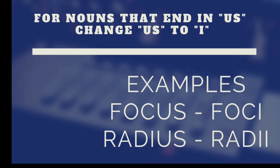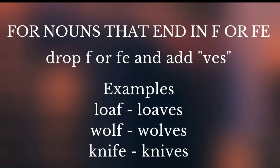Next, we are going to see nouns that end in F or FE. We drop the F or FE and add VES. For example, loaf — L-O-A-F — becomes loaves. Wolf — W-O-L-F — becomes wolves — W-O-L-V-E-S. Knife — K-N-I-F-E — becomes knives — K-N-I-V-E-S.